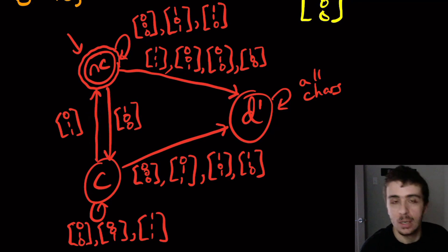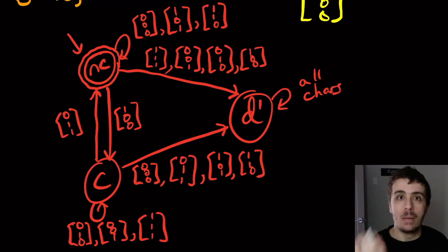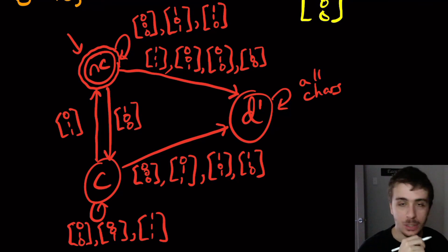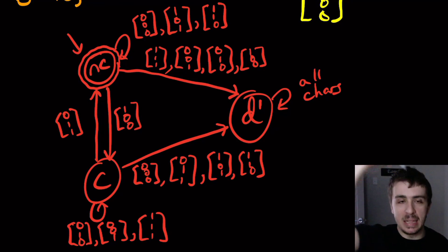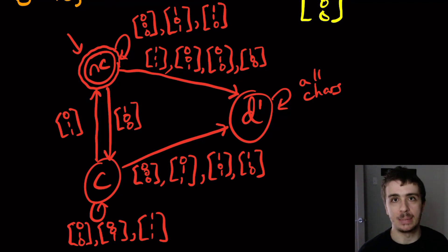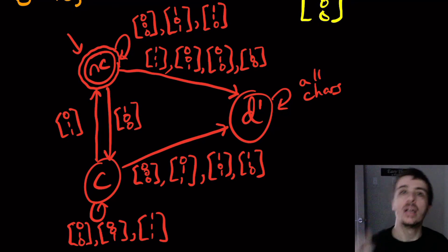Effectively all we needed to do was flip these two arrows — that's the only thing that changed, which is pretty cool. So this is a DFA for binary addition of two numbers equaling another number. Hopefully that was interesting — leave thoughts in the comments. Please like the video and subscribe to the channel, and as always, thanks for watching.